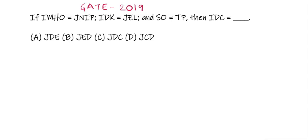Hey everyone, welcome back to my channel. I am Tounaswe and in this video I'm going to discuss a general aptitude question of GATE 2019. The question is: if IMHO equals JNIP, IDK equals